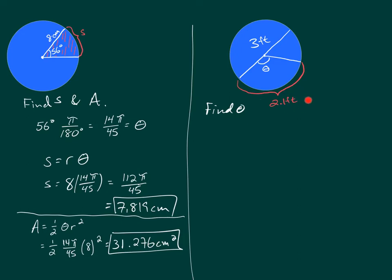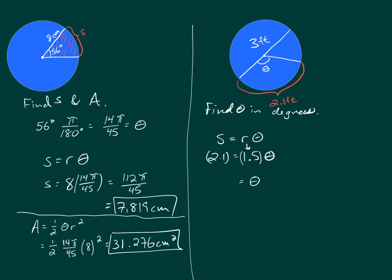In the next example you're given the arc length and the diameter. The diameter of the circle is 3 feet, so the radius is 1.5 feet, and you're asked to find the angle measure in degrees to three decimal places. Using s = rθ, substitute 2.1 for s and 1.5 for r. Dividing both sides by 1.5 gives θ = 1.4, but this is a radian measure.